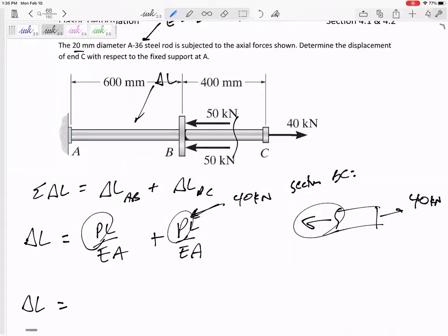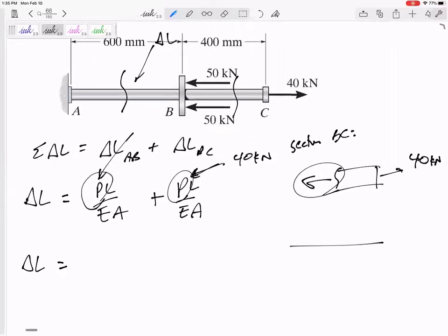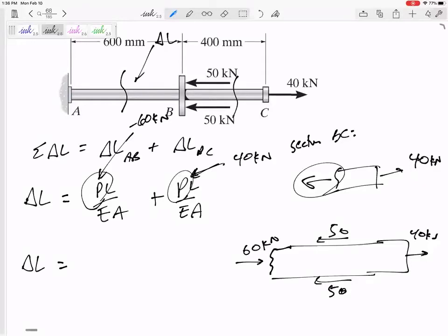I'm going to put in positive 40 right there. What about this force P inside this section? Well, let me cut it. I've got 40 kilonewtons there, but then I've got 50 and 50 right here. So summing the forces in the X direction equals zero. Do you see that I would need 60 right there? I'm going to plug in negative 60 kilonewtons right there for that P because it's 60 kilonewtons in compression.